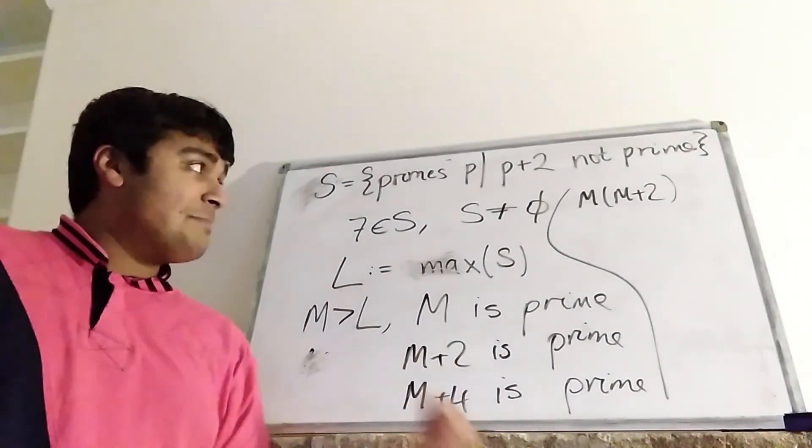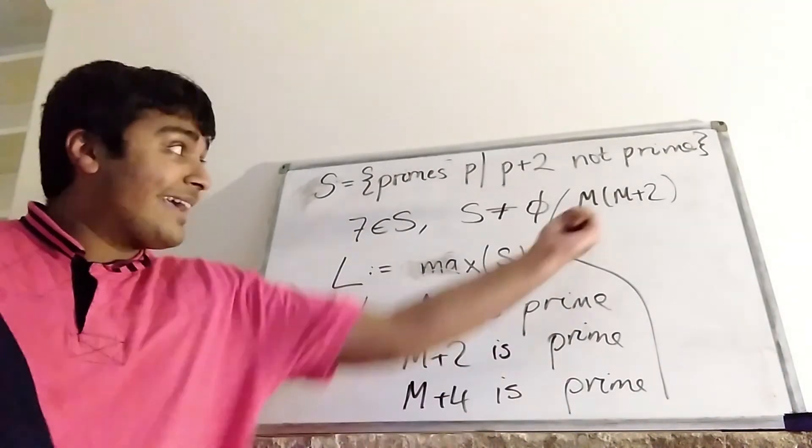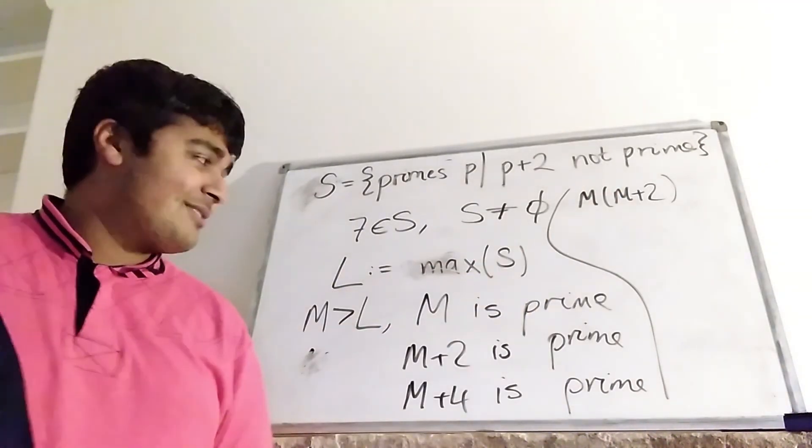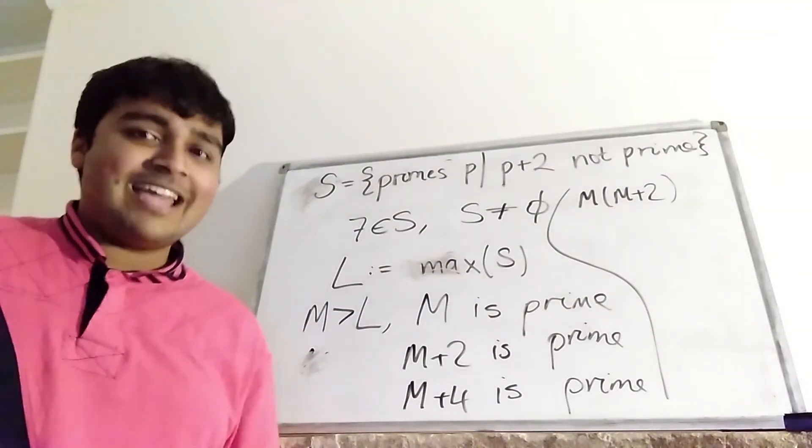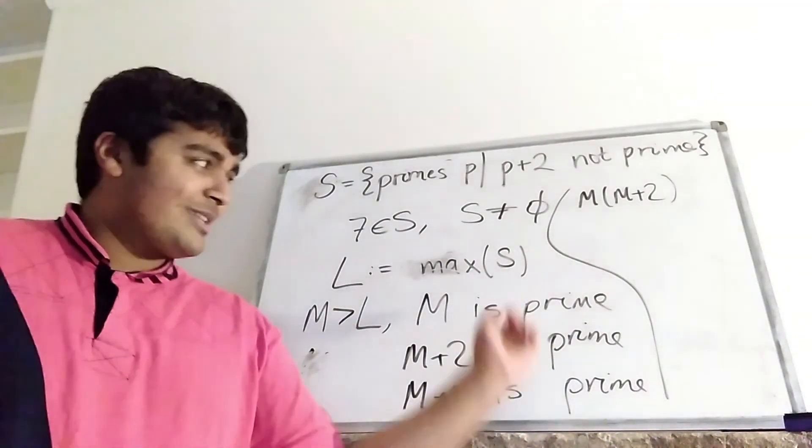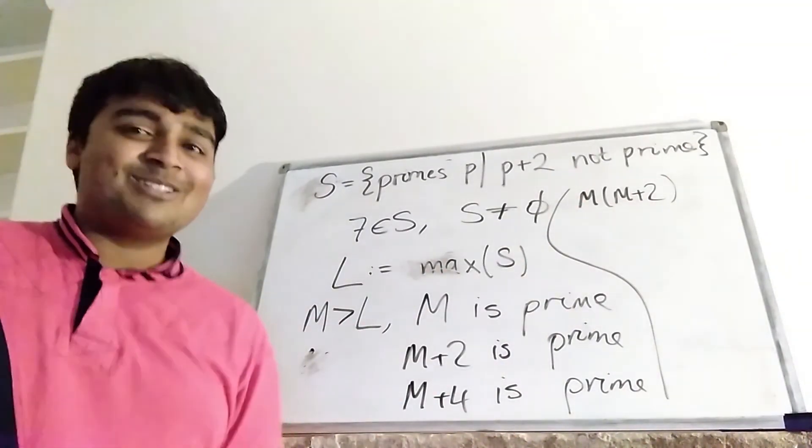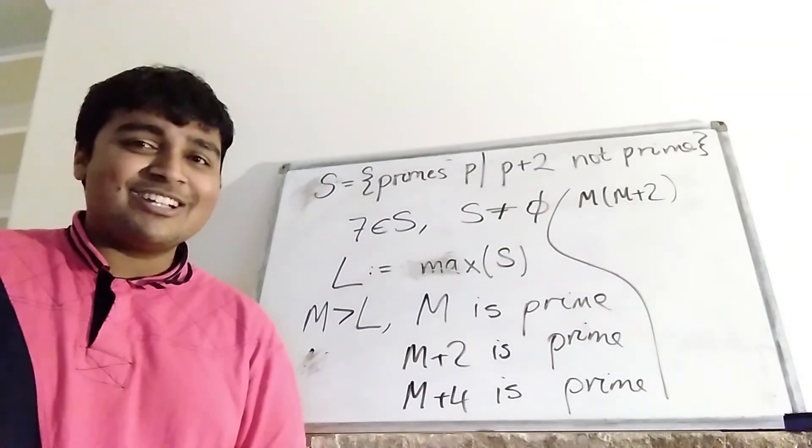But then M times M plus 2, for example, is not a prime number, clearly, because it's the product of two positive integers. But M times M plus 2, if we iterate this argument, eventually we get down to M times M plus 2, and that would be prime. According to this argument, but obviously M times M plus 2 is not prime. And that's where our contradiction comes in.